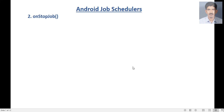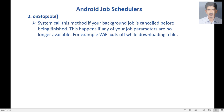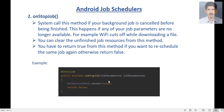The second method is onStopJob. The system calls this method if your background job is cancelled before being finished. This happens if any of your job parameters are no longer available — for example, Wi-Fi cuts off while downloading a large file. You can clear the unfinished job resources from this method. Return true if you want to reschedule the same job again, otherwise return false. Here is an example: in onStopJob I call the cancel method of the AsyncTask and return false, because I don't want to reschedule the job.